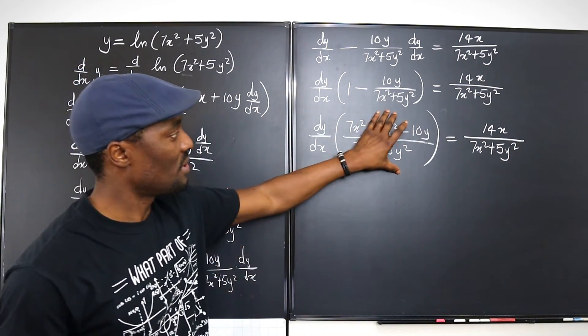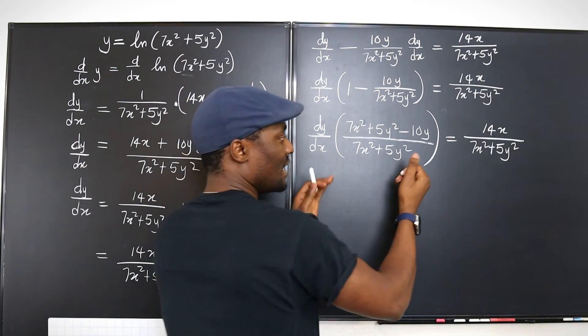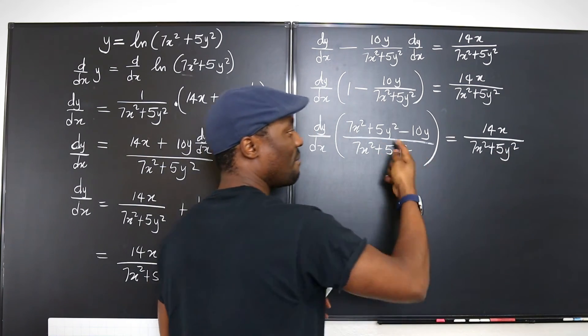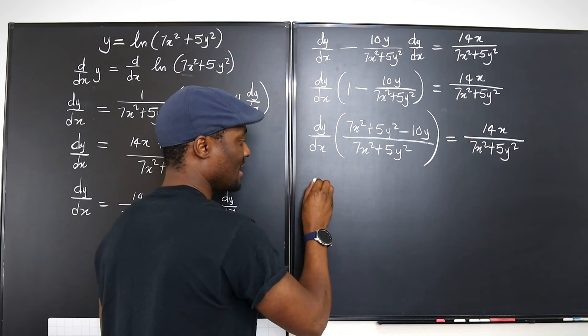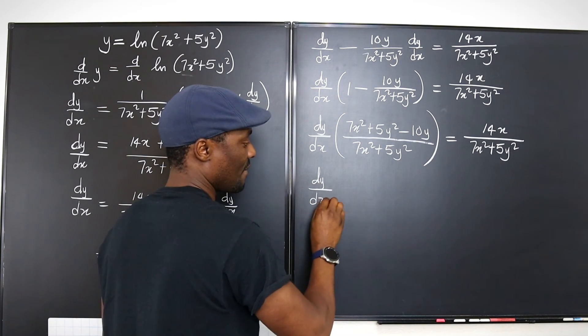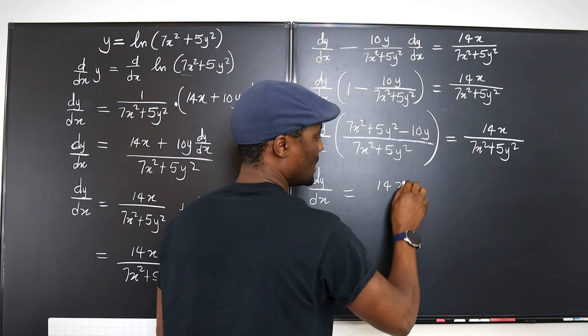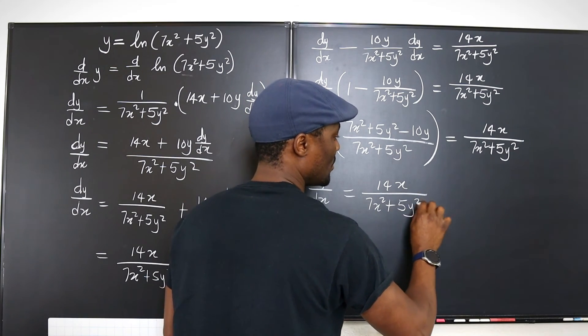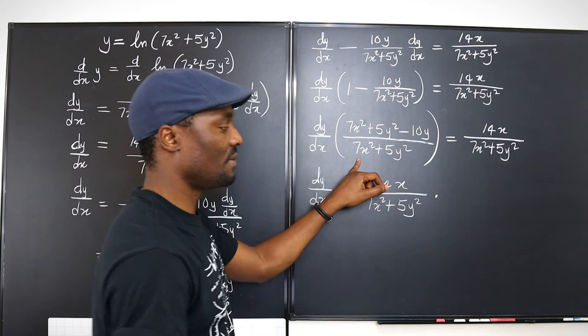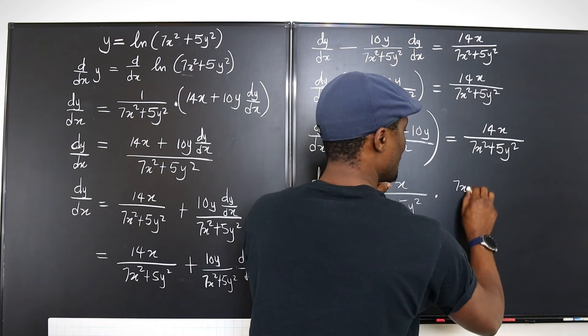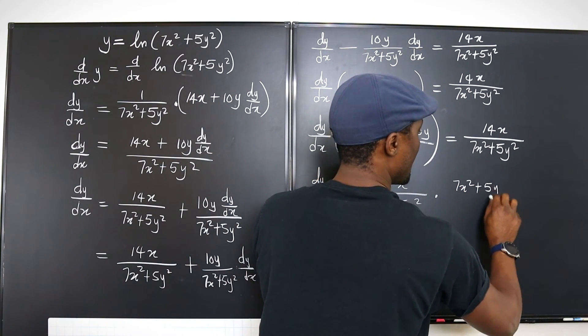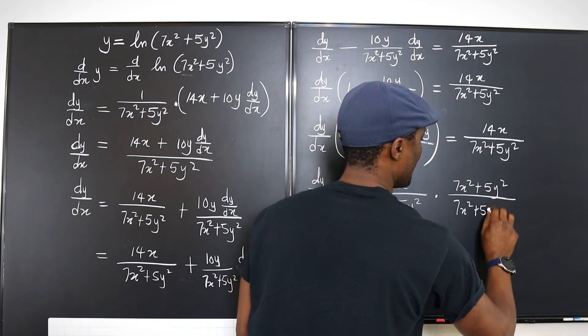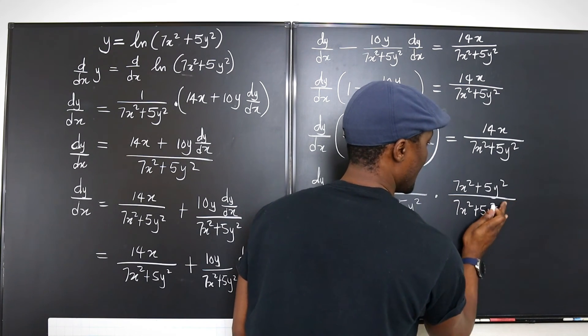So now we can divide both sides by this. And remember, if you're dividing this side by this expression, it's the same thing as multiplying it by the reciprocal of this. So we're going to write this as dy/dx will be equal to 14x/(7x² + 5y²) multiplied by the reciprocal of this. When it gets to the other side, it becomes (7x² + 5y²)/(7x² + 5y² - 10y). It's minus.